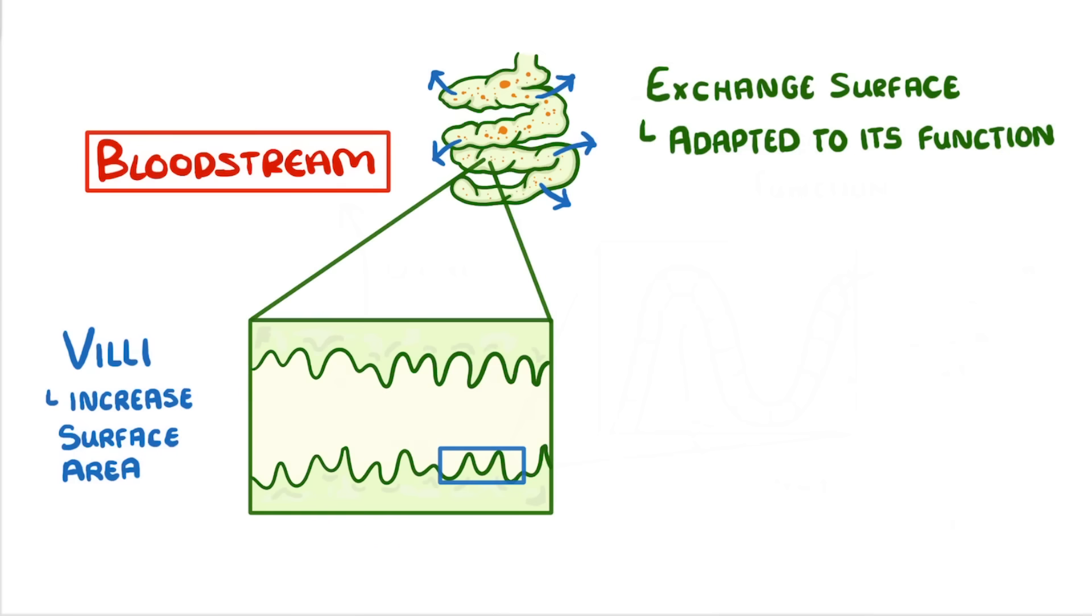Okay, so let's imagine that all of the useful nutrients have been absorbed into the bloodstream. At this point, there's still a lot of material left in the small intestine. This is because lots of the food that we eat isn't actually digestible. And because of all the secretions, for example from the pancreas, stomach and gallbladder, the leftover material is going to be really watery.